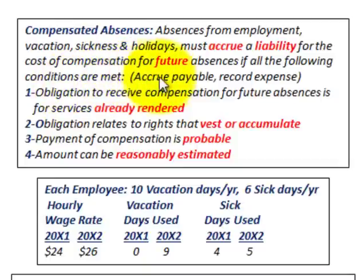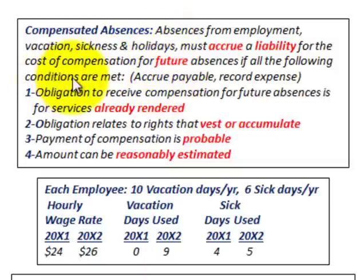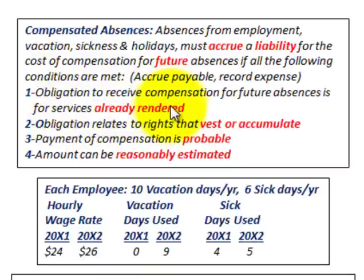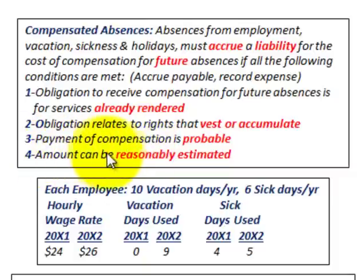To accrue means the company has to set up a payable on the balance sheet and record it as an expense on the income statement for these compensated absences. The conditions that must be met are: number one, the obligation to receive compensation for future absences is for services already rendered; number two, the obligation relates to rights that vest or accumulate; number three, the payment for compensation is probable; and number four, the amount can be reasonably estimated.